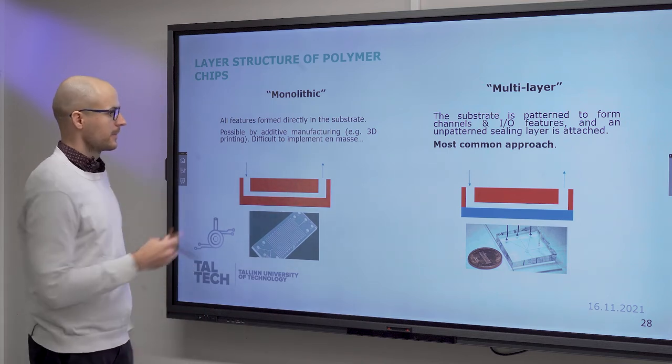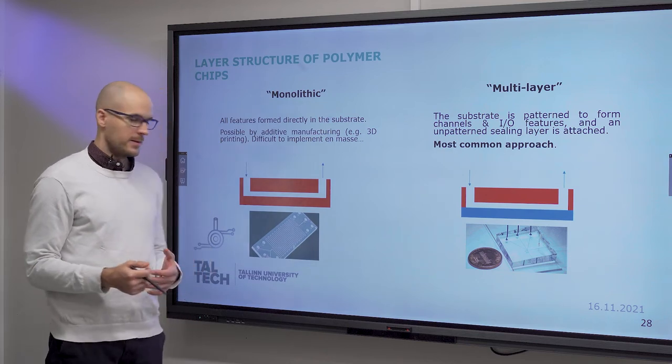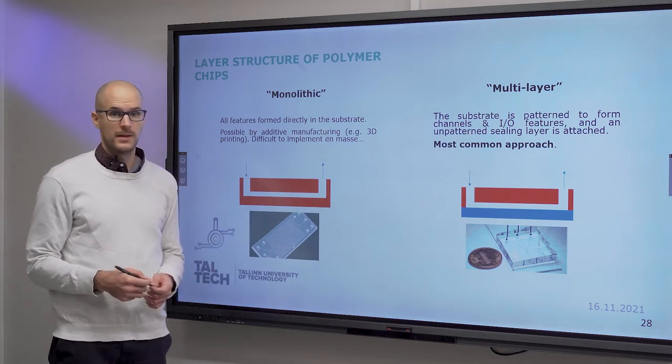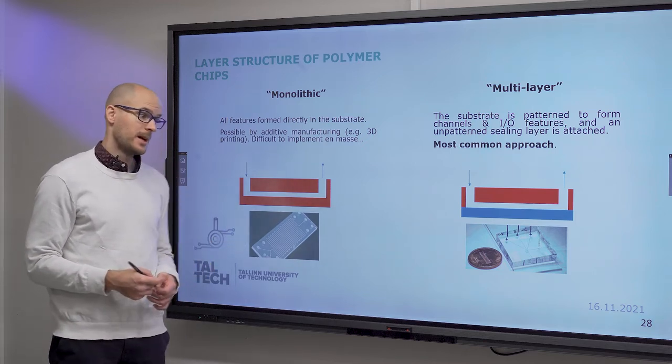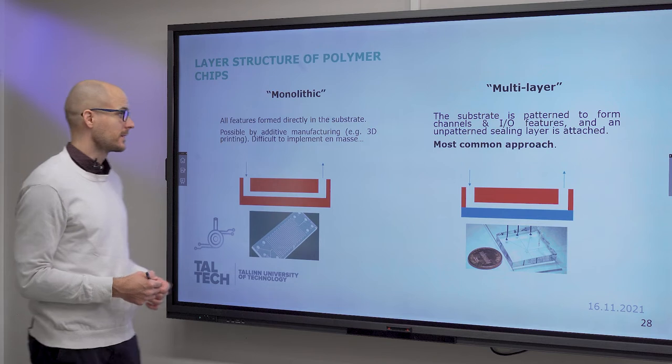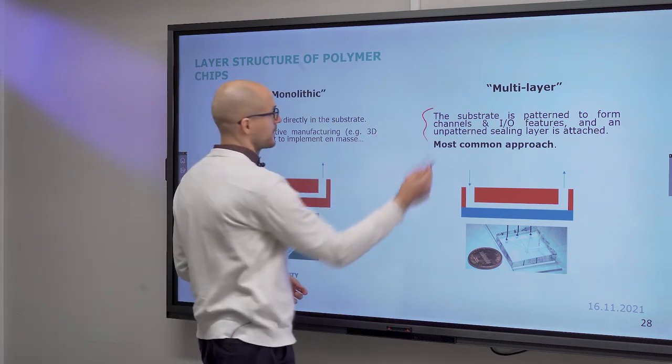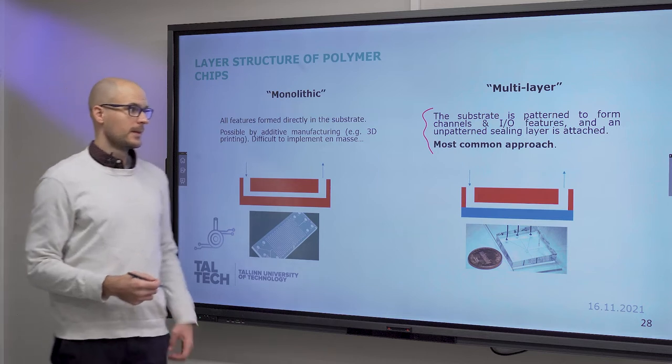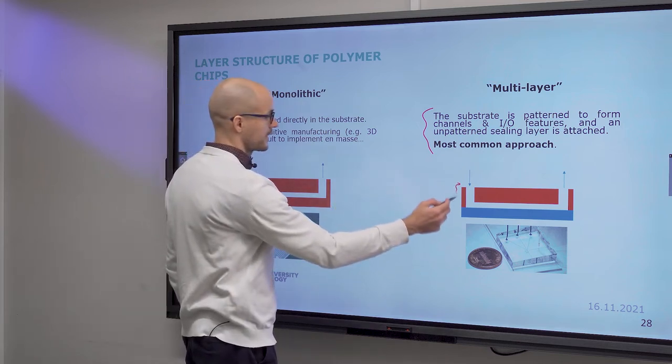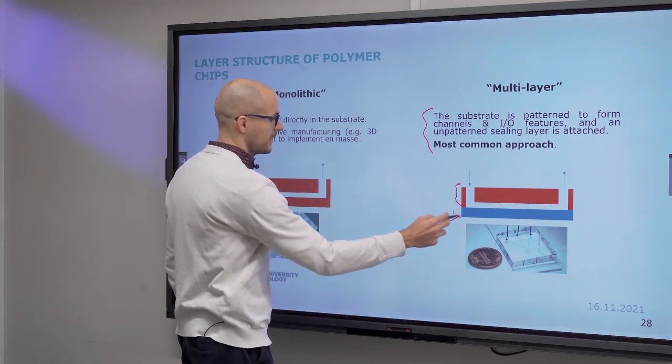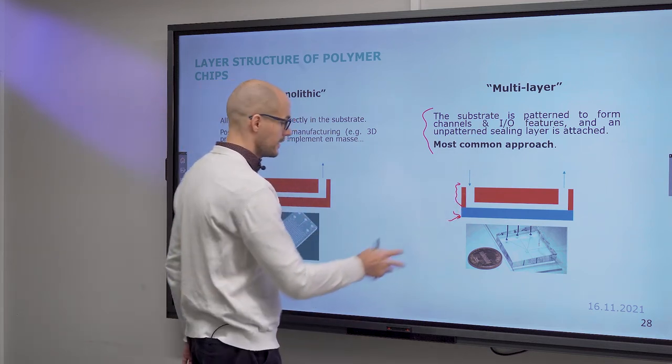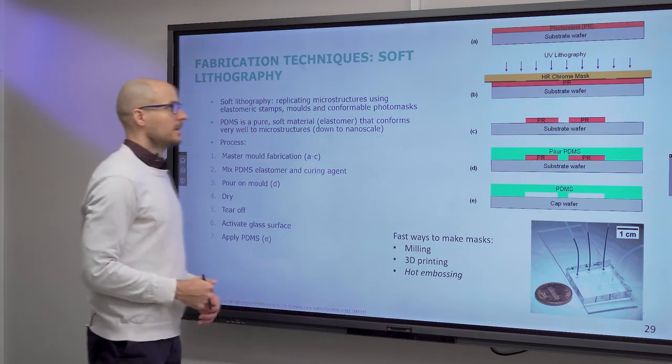If we talk about microfluidic chip layer structures, then there can be different types of chips. Monolithic would mean that all features are formed in the same substrate. However, I don't think this is very common, to be honest. It's only really possible with 3D printing to do it like this. Multi-layer, this is really what you will see most often. Where you have a layer which is patterned and contains the bulk of the chip, the microfluidic channels. And then you have a sealing layer, which the only purpose of which is to seal the channels inside your bulk layer or inside the chip layer.